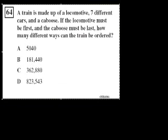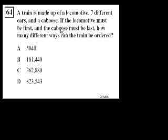Problem 64. A train is made up of a locomotive, seven different cars, and a caboose. If the locomotive must be first and the caboose must be last, how many different ways can the train be ordered?